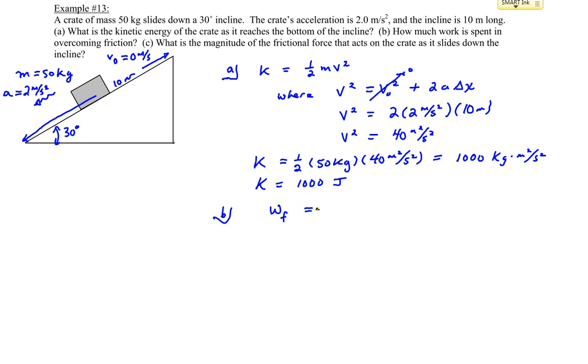To determine the work done by friction, because it's a non-conservative force, it is equal to the change in energy of the crate. The change in energy is what energy it had finally, minus the energy the crate had initially at the top.